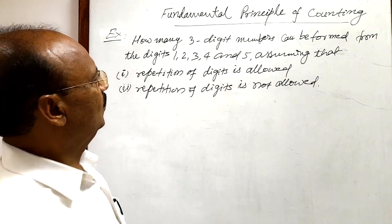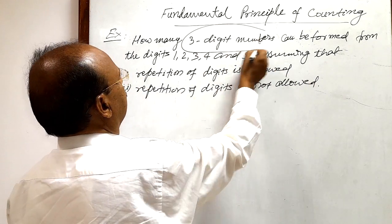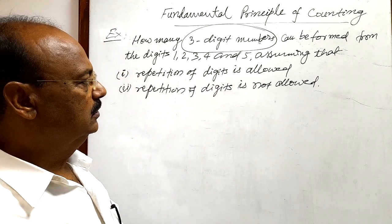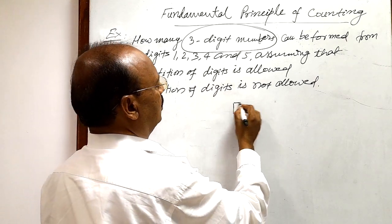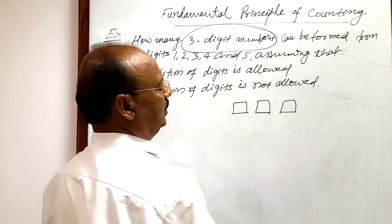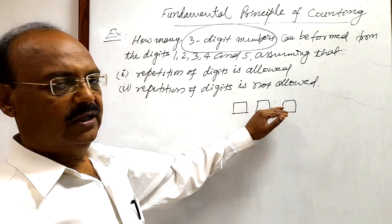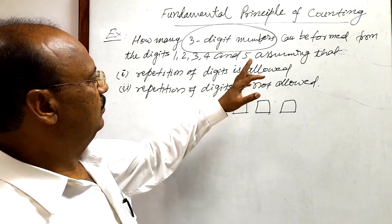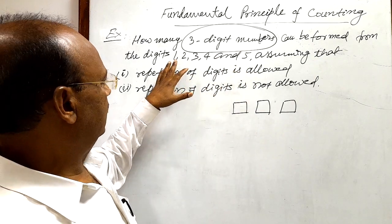So we have to form three digit numbers. First place, second place, and third place. We have to fill up all three places with the help of how many numbers, which are given here?